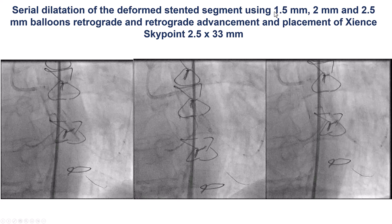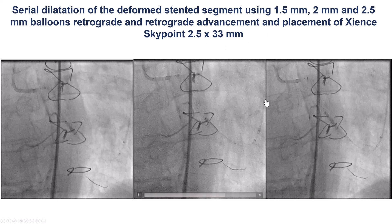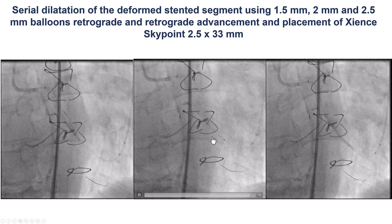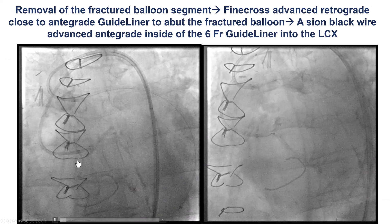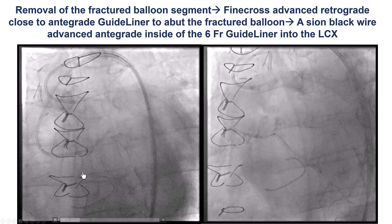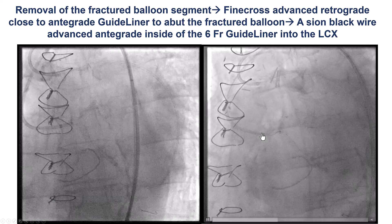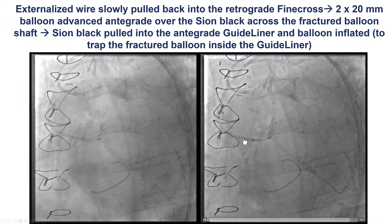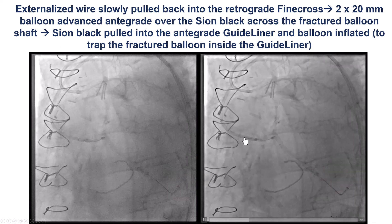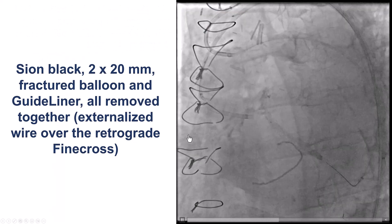Once we got enough lumen, we deployed another drug-eluting stent over the area of deformation — a retrograde delivery of a 2.5 by 33mm drug-eluting stent — which provided a nice result. After doing that, we were able to remove the externalized guide wire. We then inserted an antegrade balloon, inflated it to trap the fractured balloon, and pulled everything out. So we have the fractured balloon, the new balloon inflated, and everything coming out successfully.